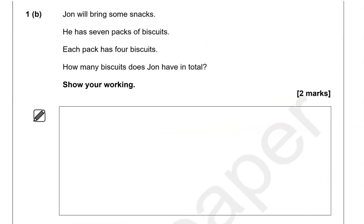John will bring some snacks. He has seven packs of biscuits. Each pack has four biscuits. How many biscuits does John have in total? Show your working. So there are seven packs, and each pack has four biscuits. So we're doing seven times four, which is also the same as four times seven, whichever you prefer.